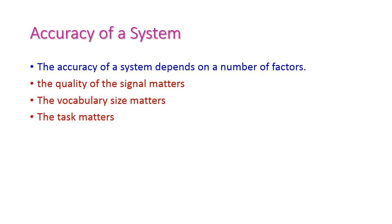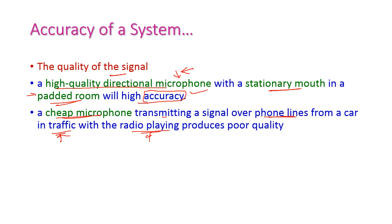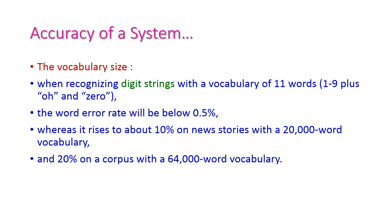The accuracy of the speech recognition system depends on a number of factors: the quality of signal, vocabulary size, and the task. For quality of signal, a very high quality directional microphone in a padded room gives very accurate results. However, using a cheap microphone, transmitting over a telephone line, recording from a car in traffic, or with a radio playing will produce very poor quality signal.